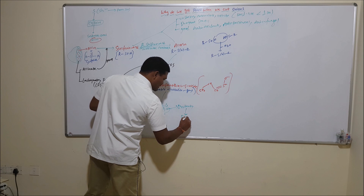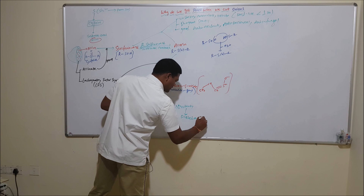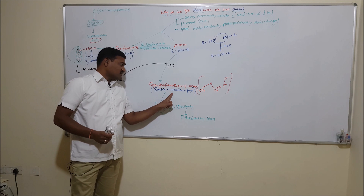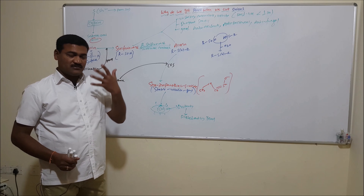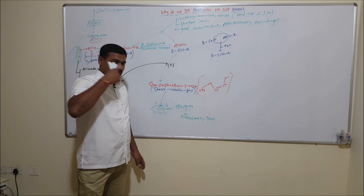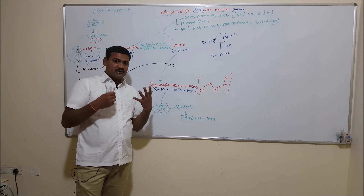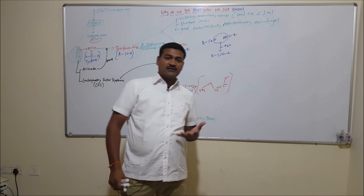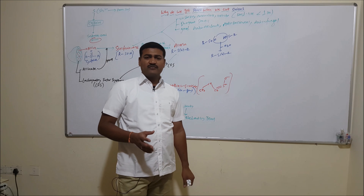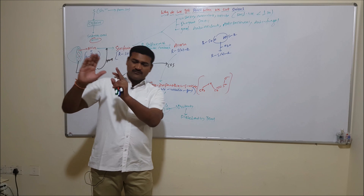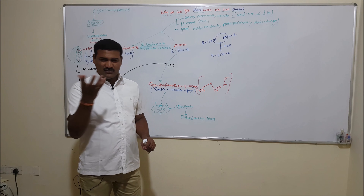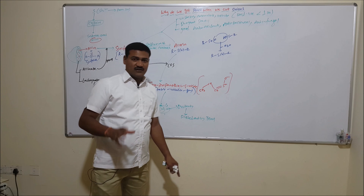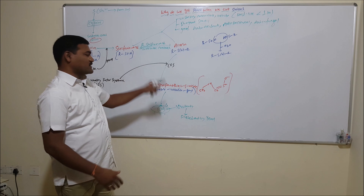To decrease that burning sensation, the eyes produce a lot of tears to dilute these irritating compounds and flush them out. The gas combines with the surface water of the eyeball, forms irritants, and these irritants are flushed out by tears. Syn-propanethial S-oxide is the main culprit for causing this burning sensation in the eye.